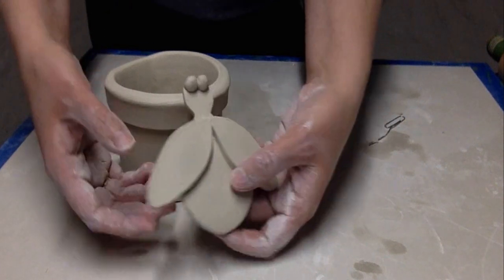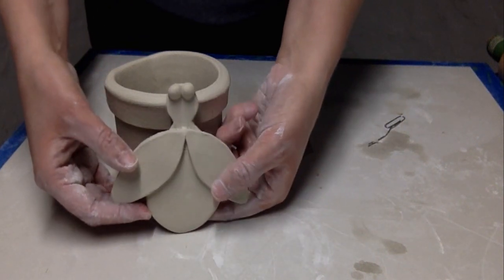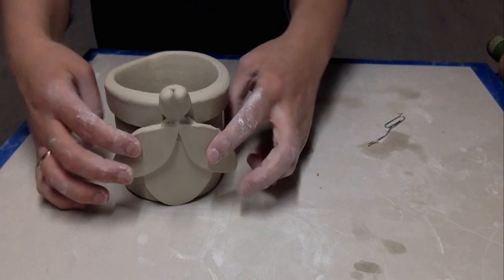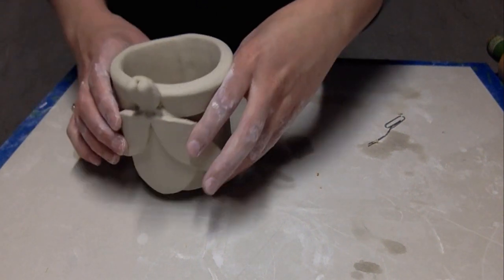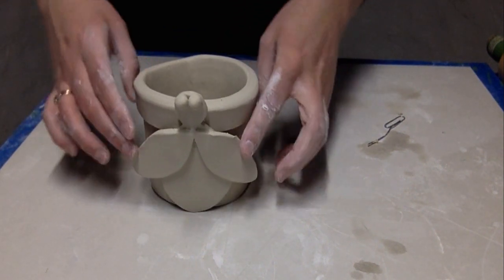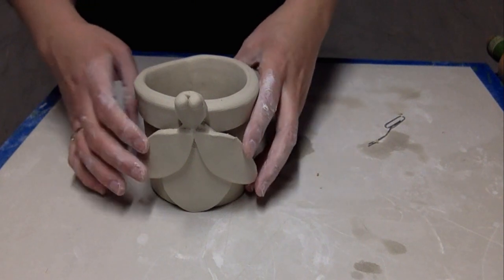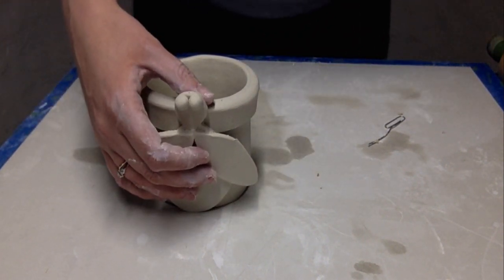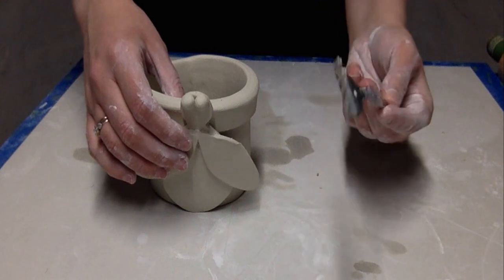Again, we're going to need to slip and score the bee onto the planter. The orientation of the bee is your choice. If you want the bee to be looking up into the flower pot you could do that, or it could be flying along the side. Either way, we need to slip and score it together using the fork like before.